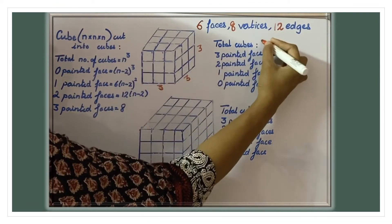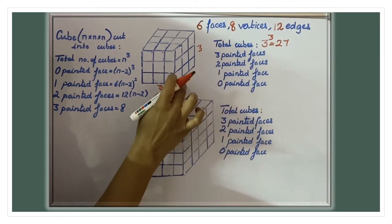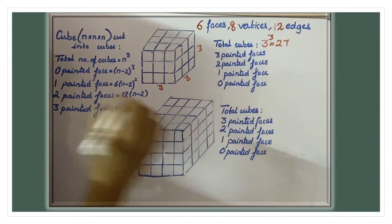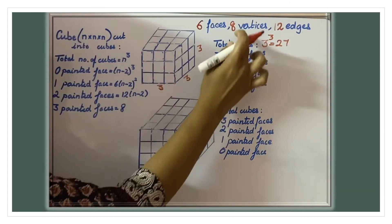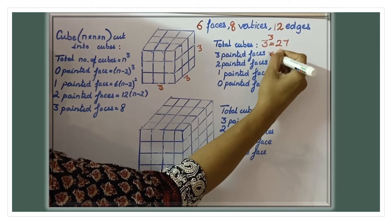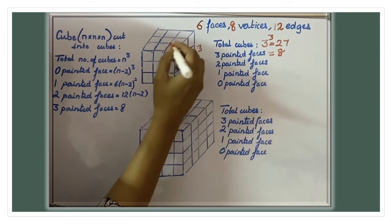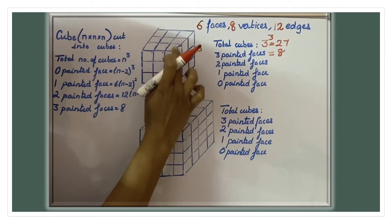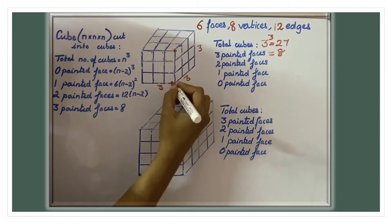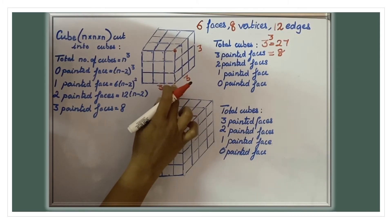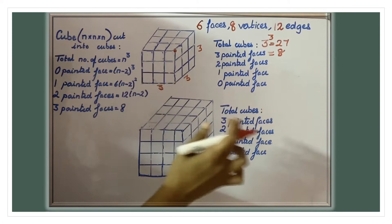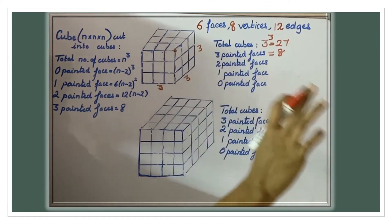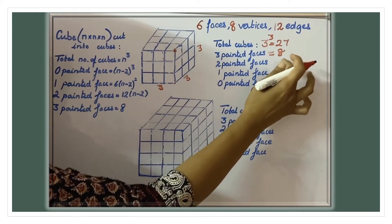n is three here, so three cubed is twenty-seven smaller cubes. Now, how many cubes are three faces painted? To find three-face-painted cubes, look at the vertices. The cube has eight vertices, so eight cubes are three faces painted — only the cubes at each vertex will be three faces painted. So out of twenty-seven, eight cubes are three faces painted.